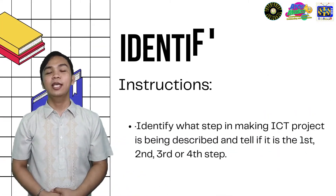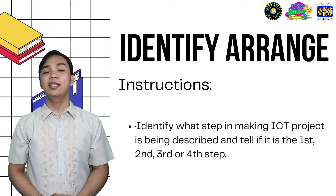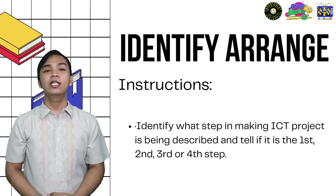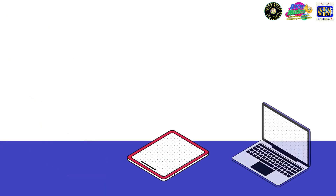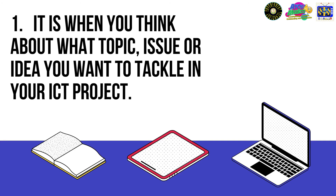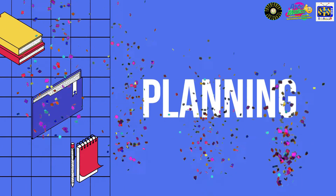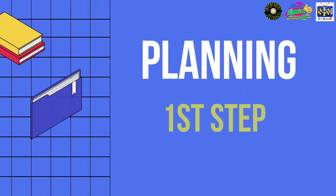This activity is called Identify and Arrange. Here are the instructions: Identify what step in making an ICT project is being described, and tell if it is the first, second, third, or fourth step. Are you ready? First one — what do you think is this step? Fantastic! It is planning. Is it the first, second, third, or fourth step? Outstanding! It is the first step.